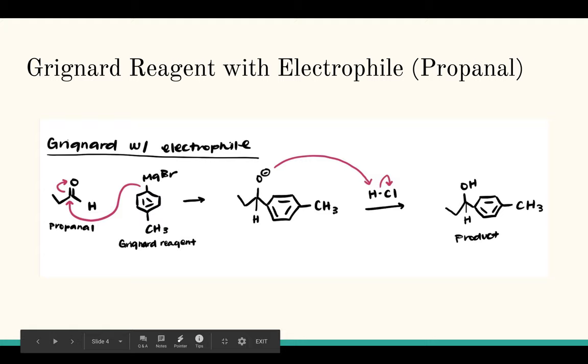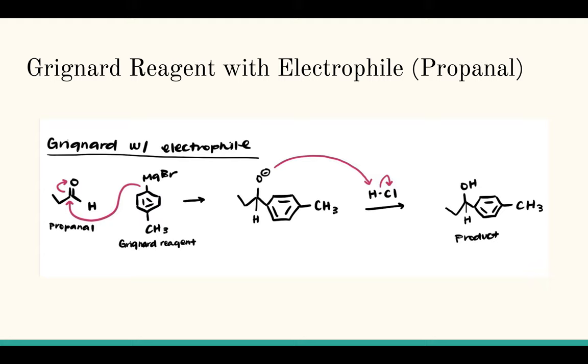So in this specific reaction we reacted that Grignard Reagent with propanal. And propanal is a good electrophile because it has that partial positive on the carbon in the carbonyl. So a lot of the electrons are being pulled up to that oxygen making that carbon a good place to attack for the Grignard Reagent.